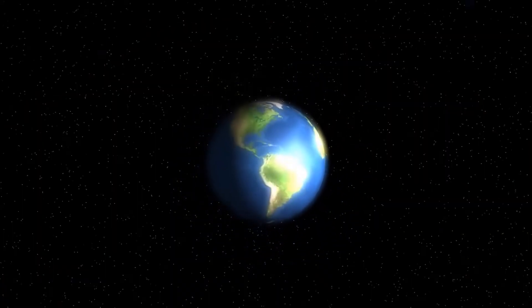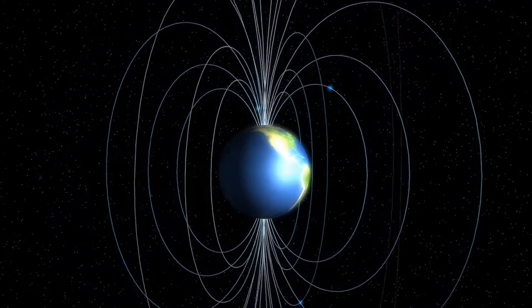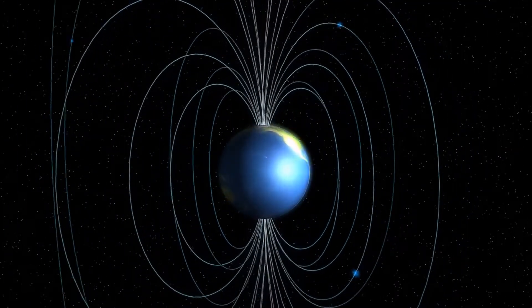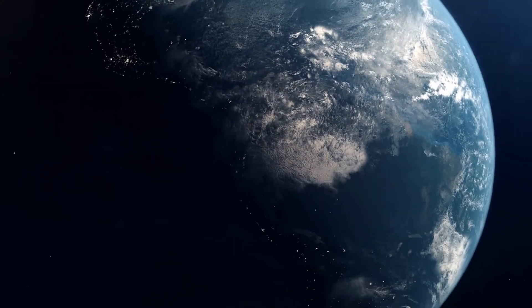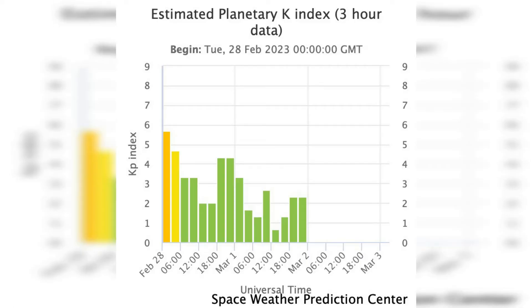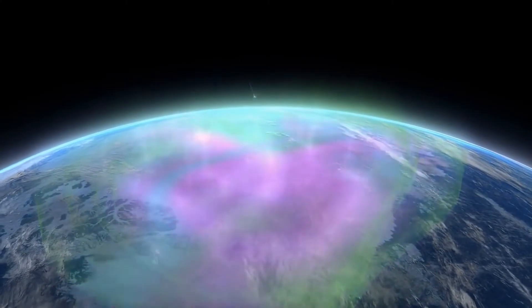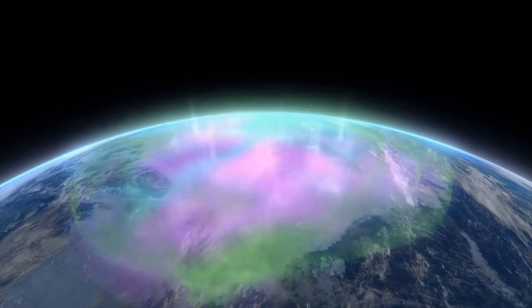During a geomagnetic storm, the Earth's magnetic field can fluctuate, causing a high Kp index, which can have a range of effects on human health. The Kp index is a measure of the Earth's magnetic activity level. It ranges from zero to nine, with zero being very little activity and nine being a severe geomagnetic storm. The Kp index is used to determine the impact of solar storms on the Earth's environment and technology.